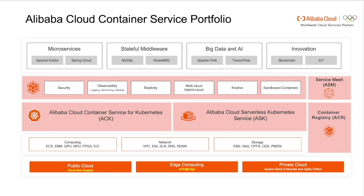ACK and Kubernetes services are built on top of Alibaba Cloud capabilities for public cloud, private cloud, and edge computing, and integrate computing, storage, network, and security. ACR supports Cloud Native application asset management, supporting any OCI artifacts such as Docker images and Helm charts. We also provide the fully Managed Service Mesh, ASM, and provide application-level networking for microservice applications across different infrastructures, different regions, and different clouds.